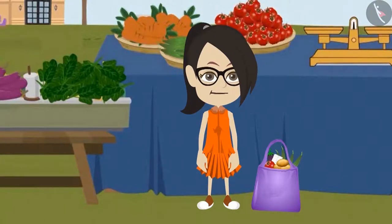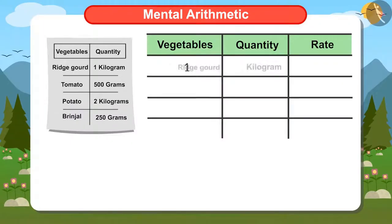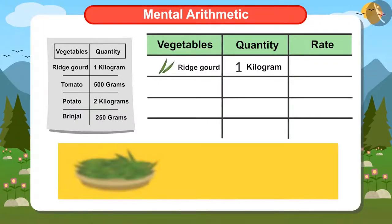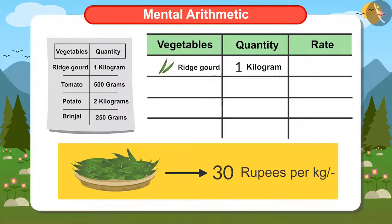I have bought a kilo of ridge gourd. The price of ridge gourd is 30 rupees a kilo. Hence, I have to pay 30 rupees for the ridge gourd.